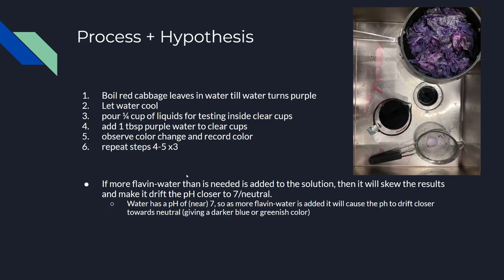So why does red cabbage water have this effect? Red cabbage contains a chemical called flavin, which is why we're using it, and it can be extracted by boiling the cabbage. Flavin reacts with the acidity of different liquids and changes color based off of that.